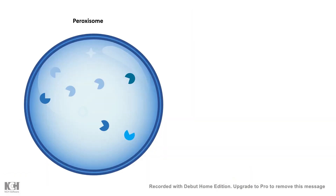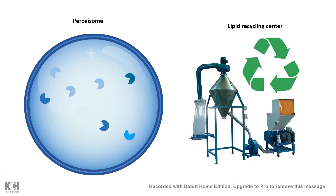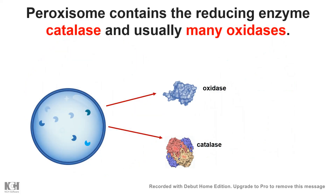The peroxisome inside our cell is considered to be a recycling center of the cell. If we imagine the cell to be a big factory, then the recycling hub is the peroxisome. Key aspects of recycling take place in the peroxisome, most notably fatty acid oxidation — especially long-chain fatty acids and branched fatty acids — D-amino acids, and sometimes polyamines are also oxidized in the peroxisome.